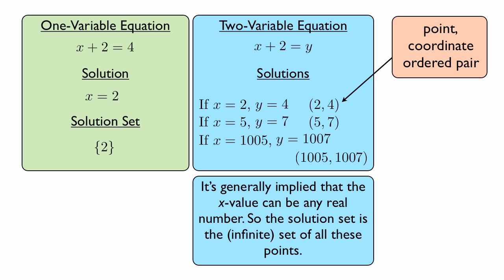And because we can't really list them, we have to find some other way of representing them. The equation is implicitly a way of listing all the points that make this equation true.